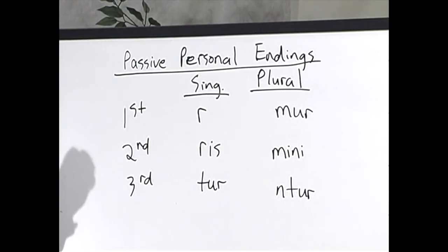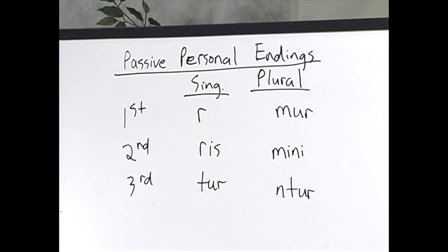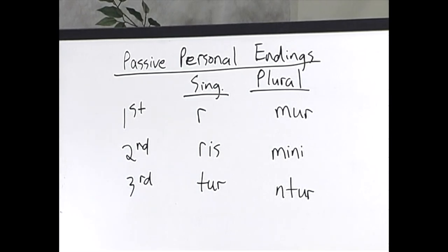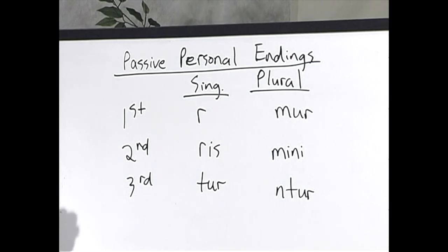These passive endings compare with the active personal endings, which are: -o or -m, -s, -t, -mus, -tis, -nt. These endings simply have to be memorized as step one, and then we will use them extensively in the formation of the passive indicative system.